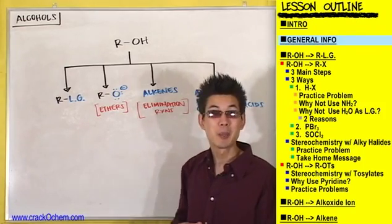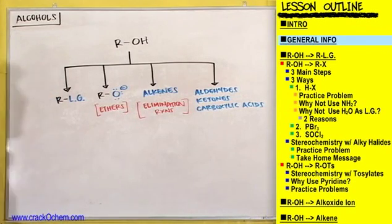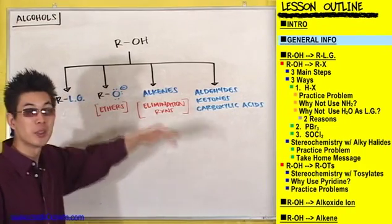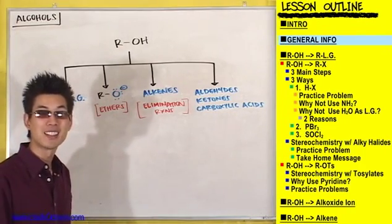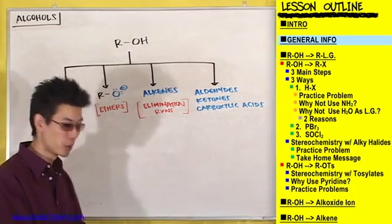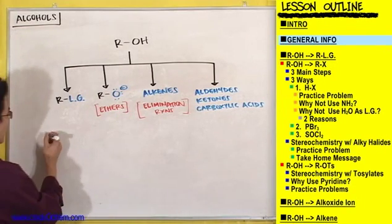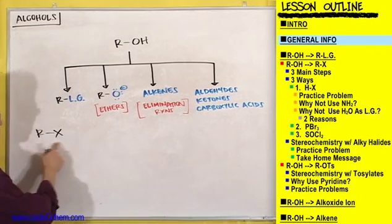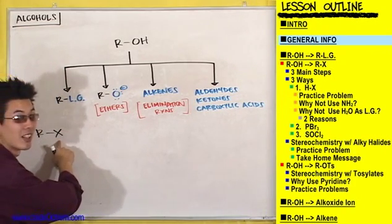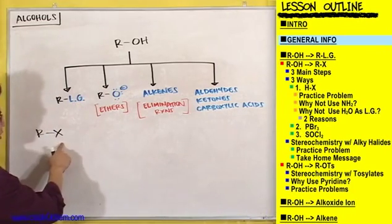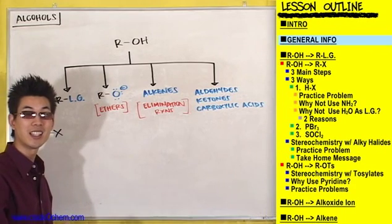We're going to be taking this alcohol and turning it into a bunch of different types of compounds. Let's look at the big picture and take it one at a time. Take an alcohol and turn it into something with a good leaving group on it — say an alkyl halide, an alkyl group with a halogen. What types of reactions do you do with an alkyl halide? Substitution reactions, like SN1 and SN2.